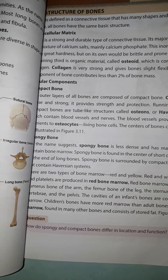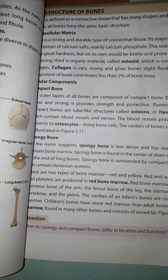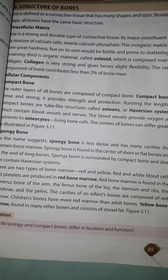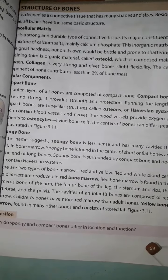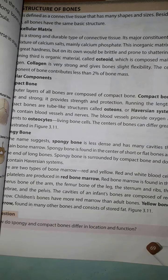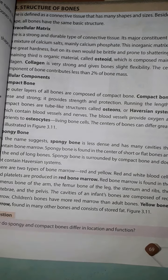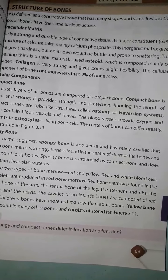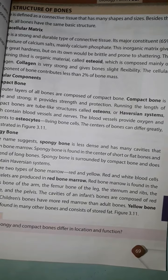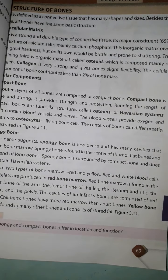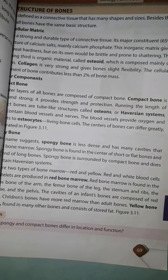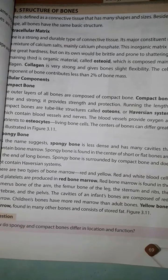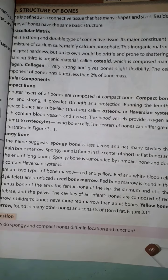There are two types of bone marrow: red bone marrow and yellow bone marrow.